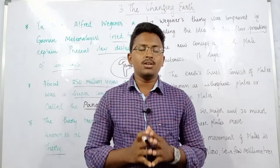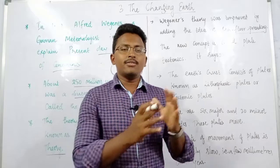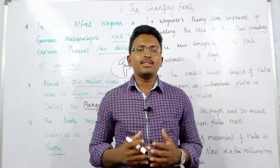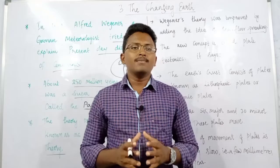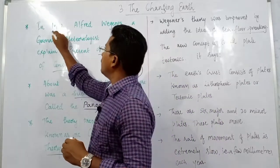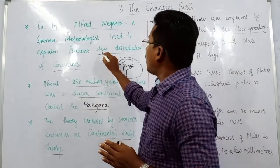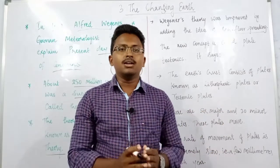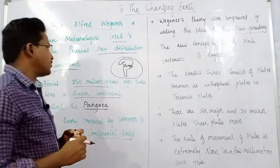In this video lecture we will discuss about Geography Chapter 3 of Class 7th — The Changing Earth. Most people believe that continents and oceans have been fixed since the beginning of the Earth. But a German scientist tried to explain how these continents were distributed. In 1912, a German meteorologist named Alfred Wegener tried to explain how the present-day distribution of continents occurred and whether they were always separate or not.